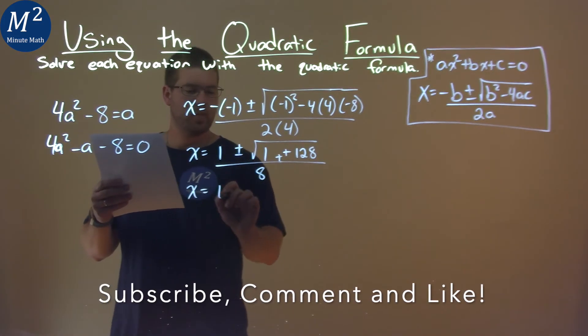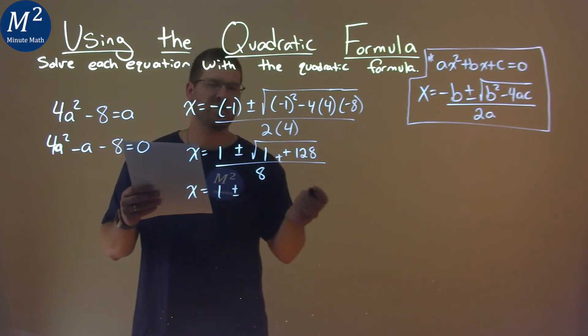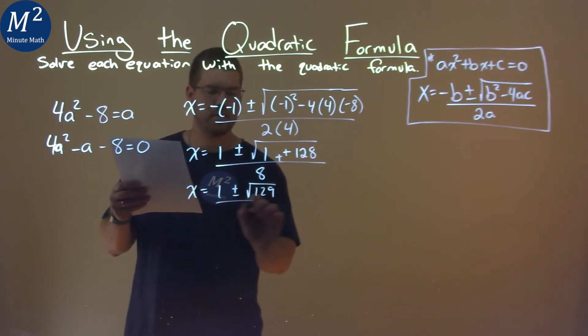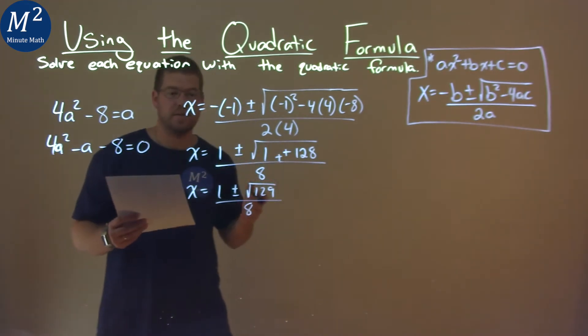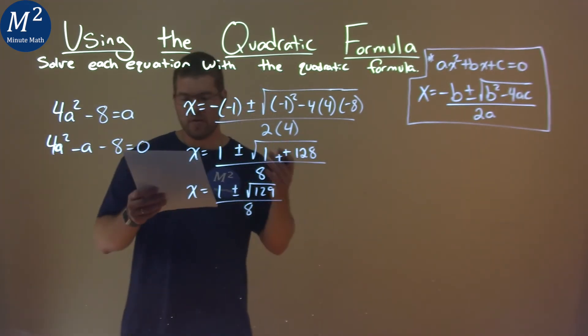Keep on going, 1 plus or minus, and 1 plus 128 is 129. So that's in the square root. And we're almost pretty much done here. We can't really simplify the square root of 129.